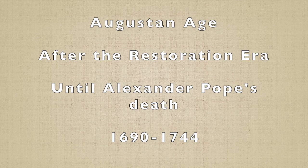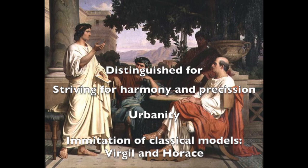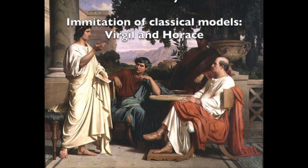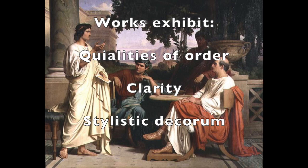Then we have the Augustan Age. The Augustan Age is the period after the Restoration era, to the death of Alexander Pope — the most relevant literary figure from this period — lasting from 1690 to 1744. This period is distinguished by its striving for harmony and precision, its urbanity, and its imitation of classical models such as Virgil and Horace. The works published in this age exhibit qualities of order, clarity, and stylistic decorum.